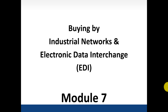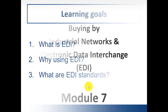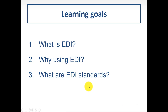We are moving away from planning-related activities and diving into the buying part of this core model — specifically buying by industrial networks and Electronic Data Interchange, also known as EDI. This is module seven. The three learning goals are: what is EDI, why use EDI, and what are the EDI standards.